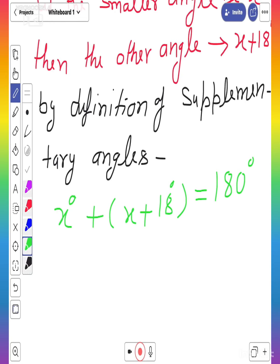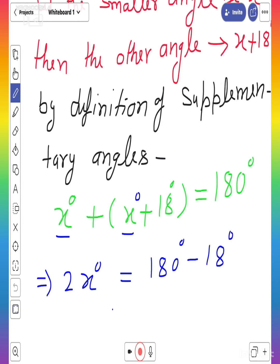Simplify it. What you will get? You will get x degrees and x degrees. This is 2x degrees. And transpose this 18 degrees to right hand side. You will get 180 degrees minus 18 degrees.